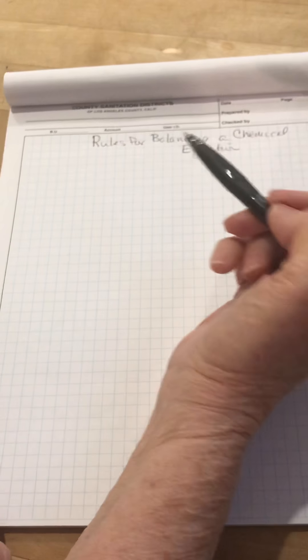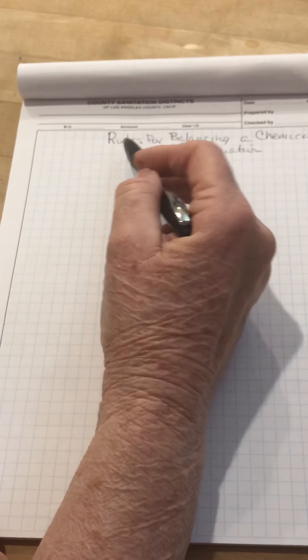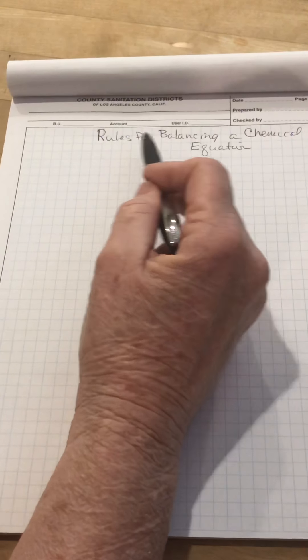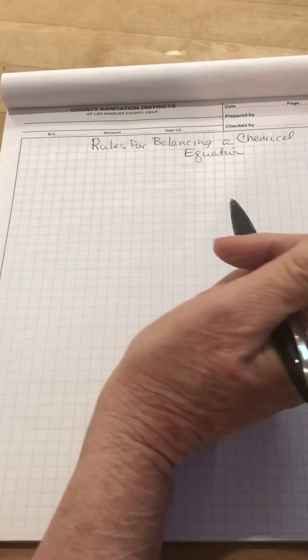So today as a second video we're going to talk about rules for balancing chemical equations. You can title it if you want to, Rules for Balancing Chemical Equations or just Rules to Balance. I don't care how you do it.